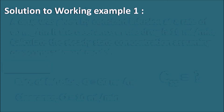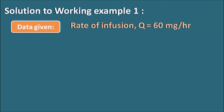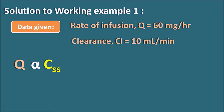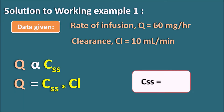The solution to working example one: the rate of infusion is given as well as the clearance is given. The rate of infusion is directly proportional to the steady state concentration — as you increase the rate of infusion the steady state concentration also increases. So Q is equal to CSS into clearance, and therefore CSS is equal to Q divided by clearance — that is the ratio of the rate of infusion to clearance.